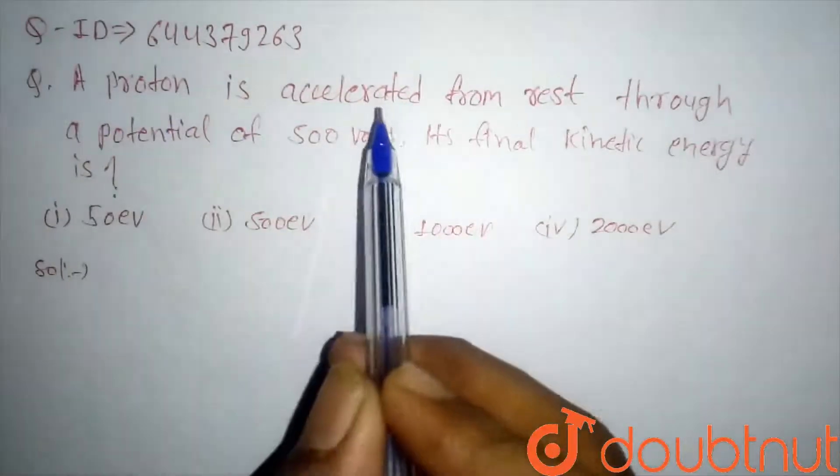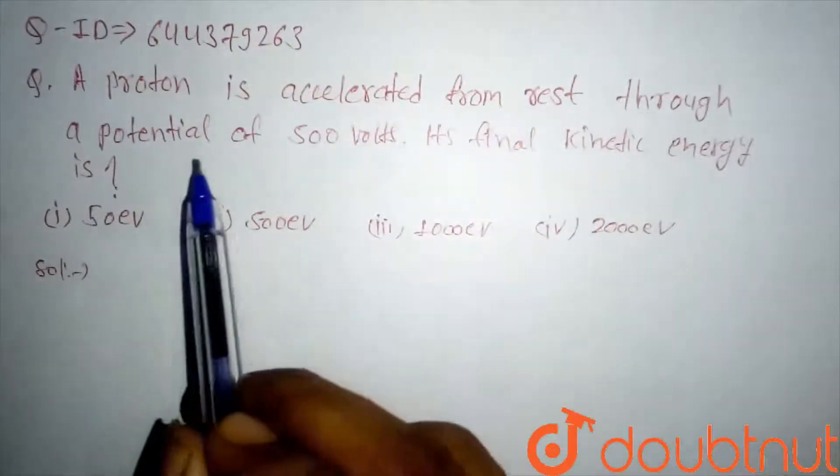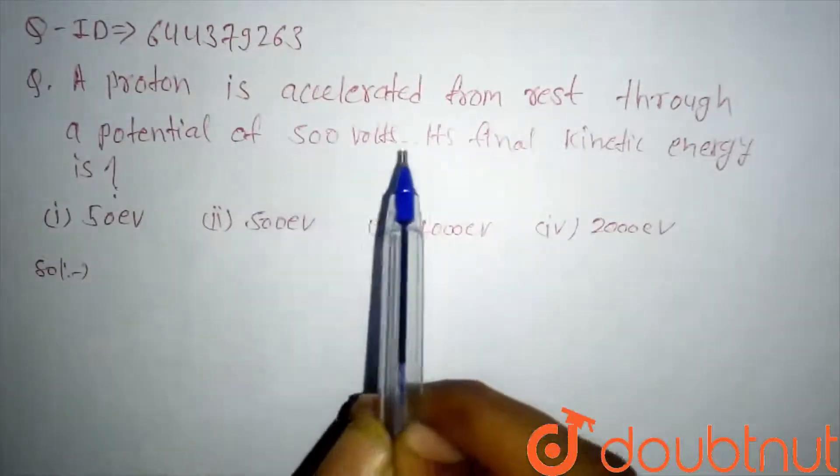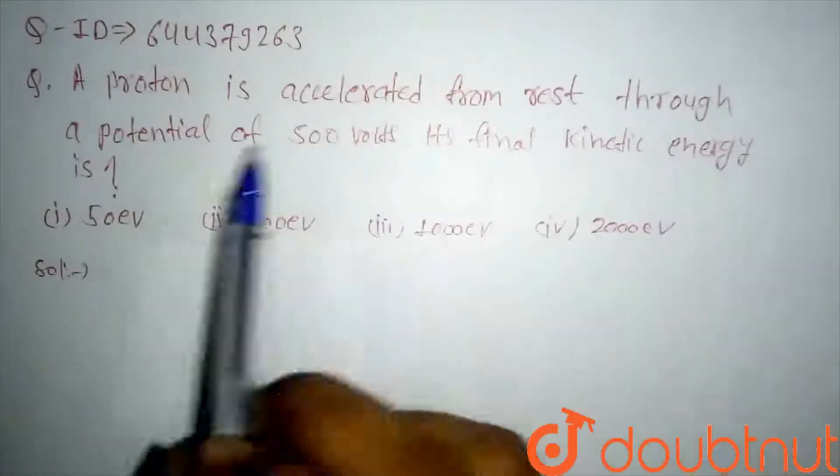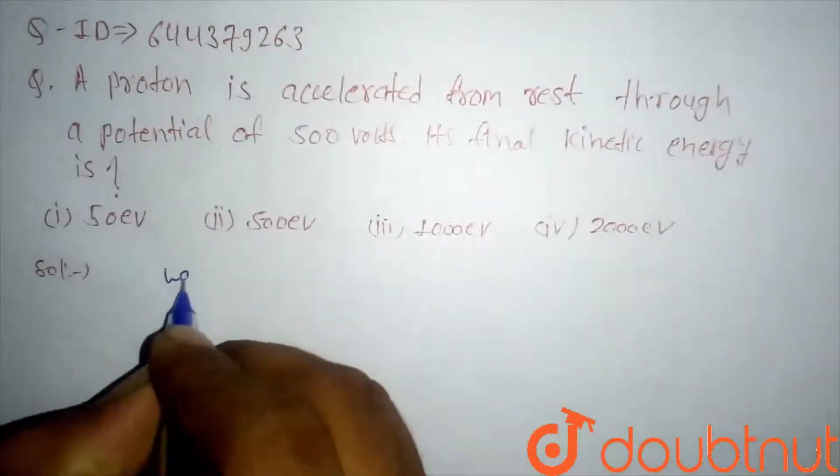A proton is accelerated from rest through a potential of 500 volts. Its final kinetic energy is?